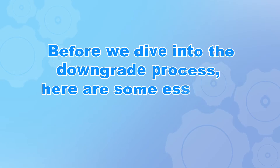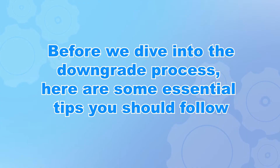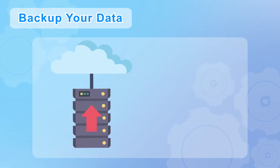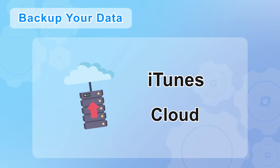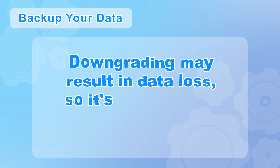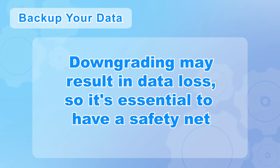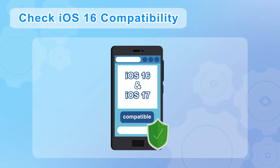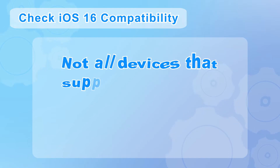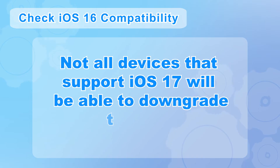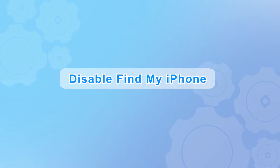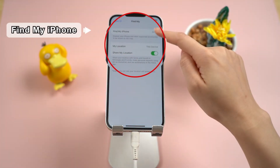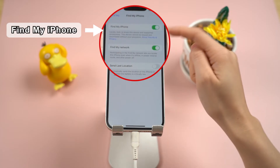Before we dive into the downgrade process, here are some essential tips you should follow. First, backup your data before starting — make sure to back up all your important data using iTunes or iCloud, as downgrading may result in data loss. Second, check iOS 16 compatibility, since not all devices that support iOS 17 will be able to downgrade to iOS 16. Third, disable Find My iPhone: go to Settings > your name > Find My > Find My iPhone, and turn it off. This will allow a smoother downgrade process.